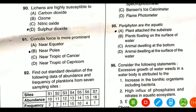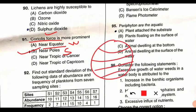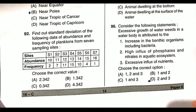Question 91: Coriolis force is more prominent near which part of our planet. Coriolis force is more prominent near the poles — it is weaker near the equator but stronger near the poles. It is an apparent force caused by the Earth's rotation. When the Earth rotates, this force is generated and is responsible for the deflection of wind. Wind movement throughout the planet is largely due to the Coriolis force.